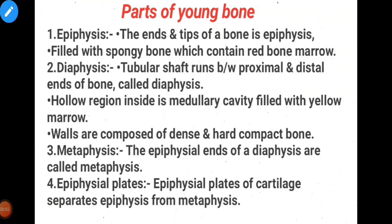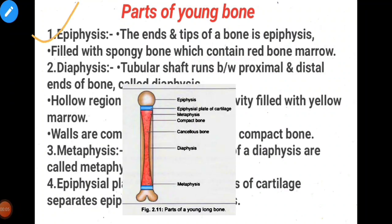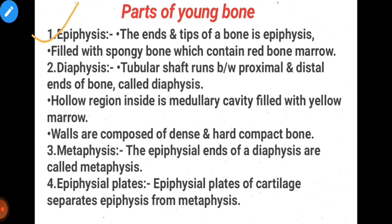Parts of a long bone. Number one: epiphysis. The ends and tips of a bone are the epiphysis. It is filled with spongy bone, also called cancellous bone, which contains red bone marrow. The function of red bone marrow is to form RBCs, WBCs, and platelets — hemopoiesis occurs here.